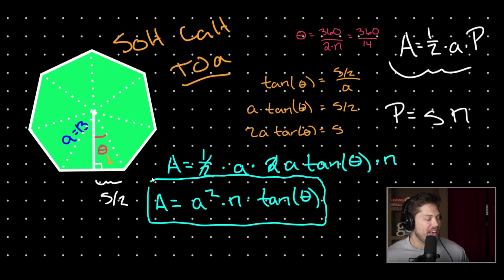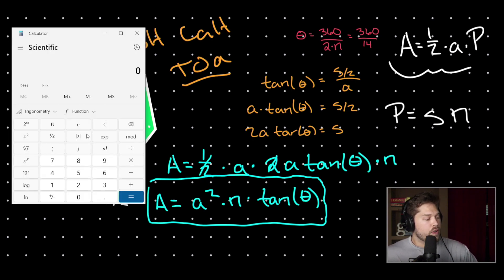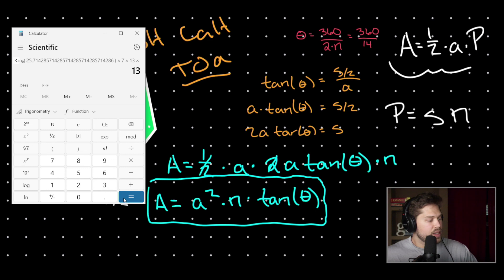Let's use the formula now. Pulling out our calculator, our apothem is equal to 13. First, what is tangent of theta? Theta was 360 divided by 14, so we apply the tangent function to that value. Then we multiply by the number of sides, which was 7, and then multiply by our apothem squared — 13 times 13. We get a value of 569.7.